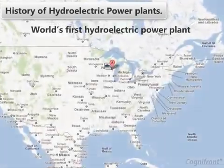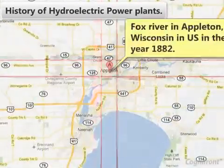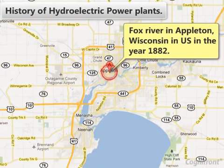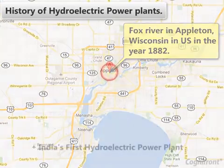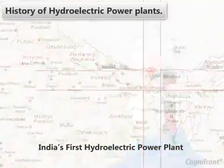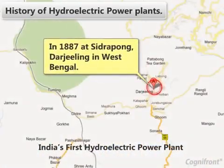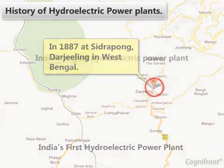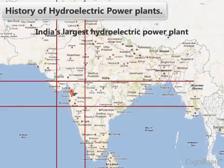History of Hydroelectric Power Plants. The world's first hydroelectric power plant was built across the Fox River in Appleton, Wisconsin, in the US in the year 1882. India's first hydroelectric power plant was commissioned in 1887 at Sidrapong, Darjeeling in West Bengal.